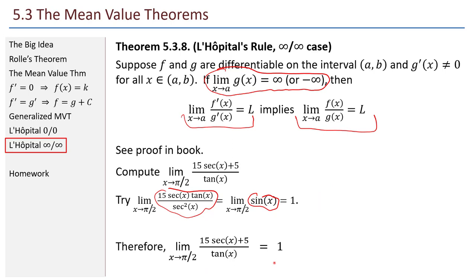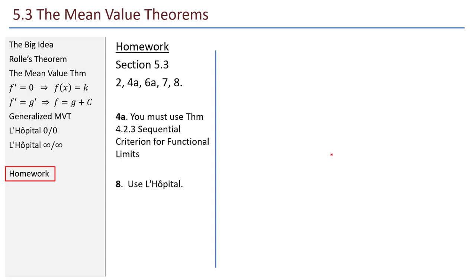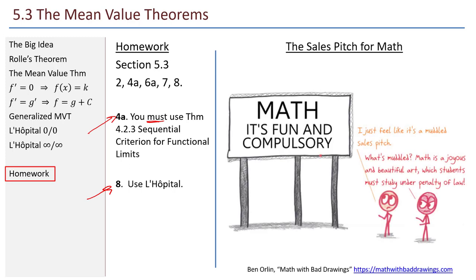That's it for the mean value theorem. Here is some homework from 5.3: problems 2, 4a, 6a, 7, and 8. For problem 4a you must use theorem 4.2.3 — the sequential criterion for functional limits — in your proof, and indicate at which point you are using that theorem. In problem 8, think about using L'Hôpital's rule. Give those homework problems a try — stick to it, don't give up. Appreciate the mean value theorem, the foundation for so many results in differential calculus.